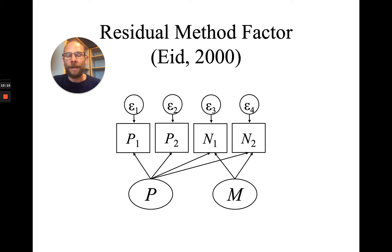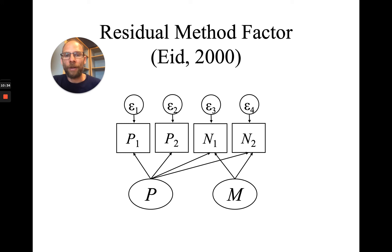There are other ways to introduce method factors. This residual method factor approach has many advantages, particularly because it allows an additive variance decomposition and a clear separation of effects. Other ways for introducing method factors are also available — for example, you can have a method factor that is a latent difference score factor. I will present that in a later video. Now let's take a look at how this model allows us to define coefficients for separating different variance components.